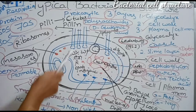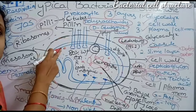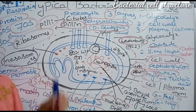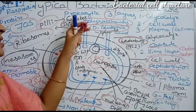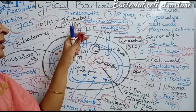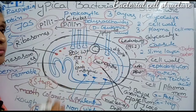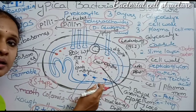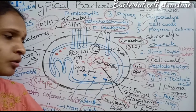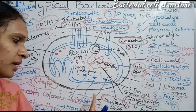Pili are small hair-like structures on bacterial cells, made up of a special protein called pilin. They are used during conjugation for the formation of conjugation tubes, through which genetic material is transferred. Flagella are long thread-like structures used for locomotion. Each flagellum has three parts: hook, basal body, and filament. Their subtypes based on position and number are discussed in a previous video.